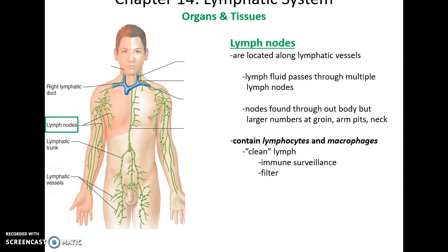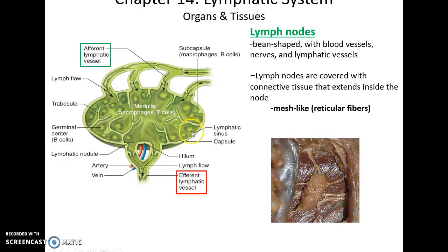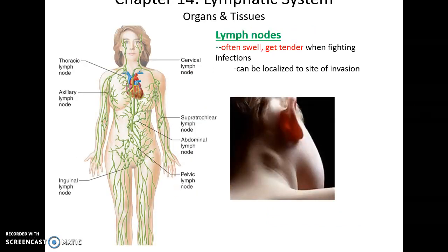Lymph nodes are little filtering structures found along the lymph vessels. They filter the lymph fluid multiple times as it travels, and are found in higher concentrations in the groin, armpits, and neck. They contain lymphocytes and macrophages checking and surveilling for pathogens, and also filter out cell debris. A cross-section shows afferent lymphatic vessels arriving with lymph fluid, efferent lymphatic vessels carrying it out, macrophages and T-cells checking for pathogens, and mesh-like reticular fibers helping to filter the fluid. Lymph nodes can swell and get tender when fighting a localized infection.